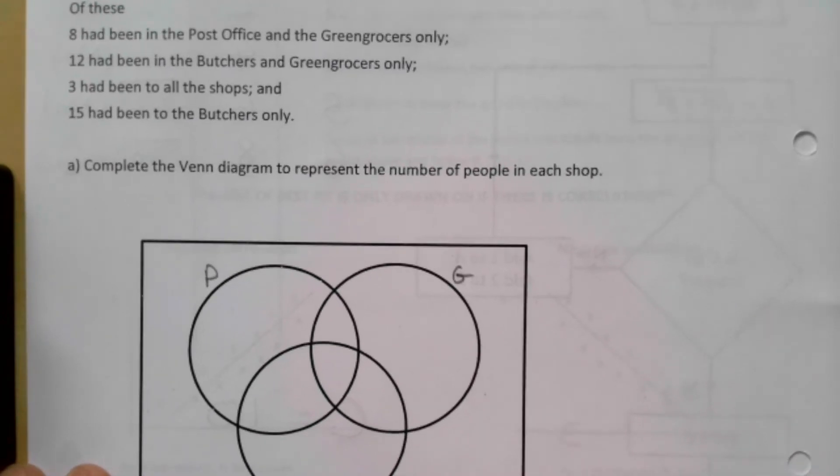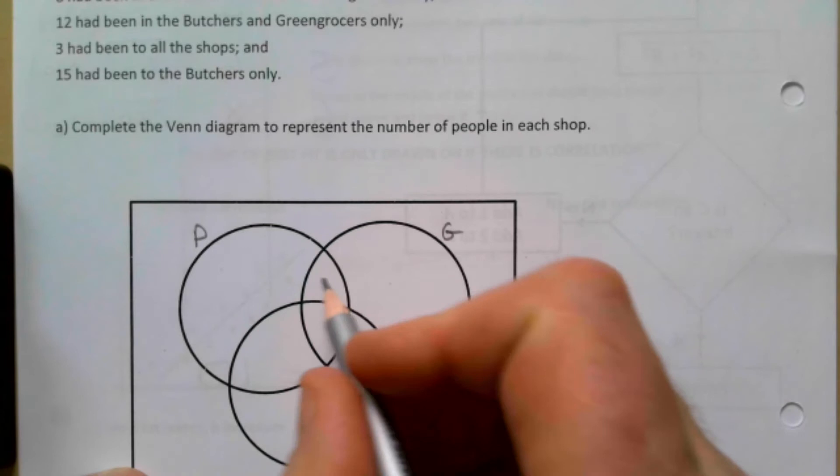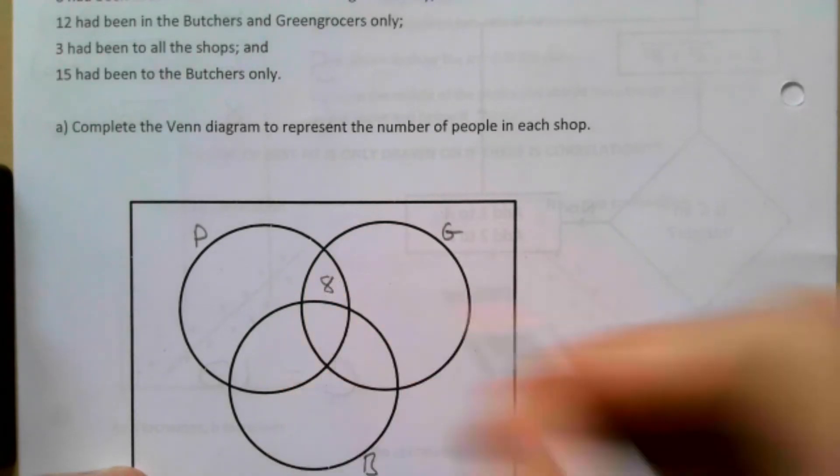So 8 had been in the Post Office and Greengrocers only. Can you see which section that's going to be in? That's going to be your 8 there.